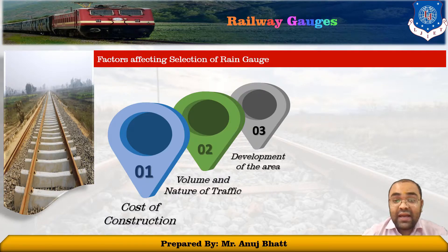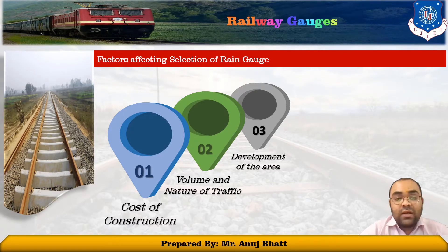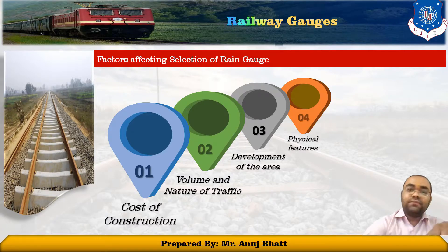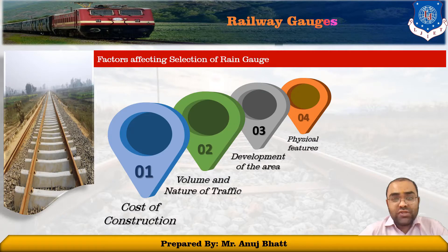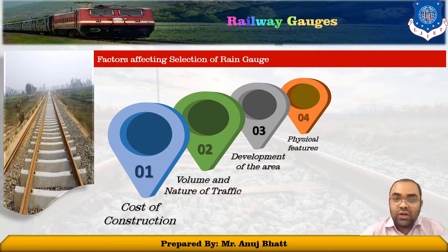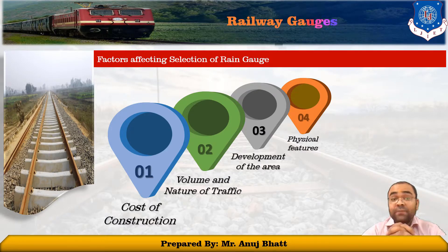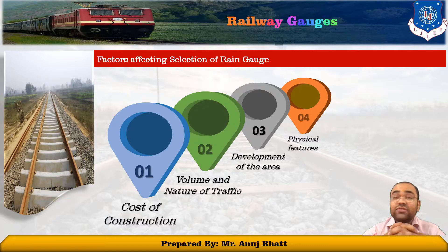The fourth factor - the physical features of a particular country - also affects gauge choice. Use of narrow gauge is warranted in hilly areas where broad and meter gauge are not possible due to steep gradients and sharp curves. In plain areas also, where high speed is not required and traffic is light, narrow gauge is the correct choice.